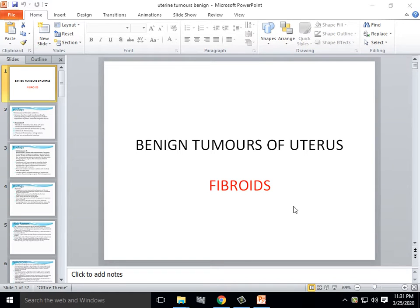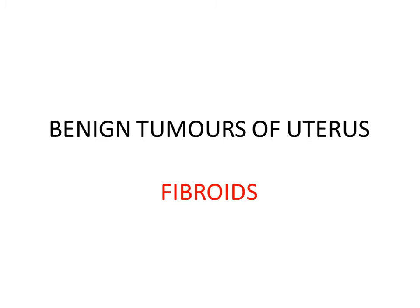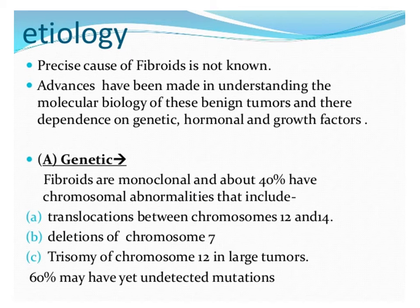Today we are going to talk about the benign tumors of the uterus. There are a number of benign tumors of the uterus; fibroids are the most common one, also called fibromyomas. The other benign tumor is adenomyosis, but we will talk about it in some other lecture.